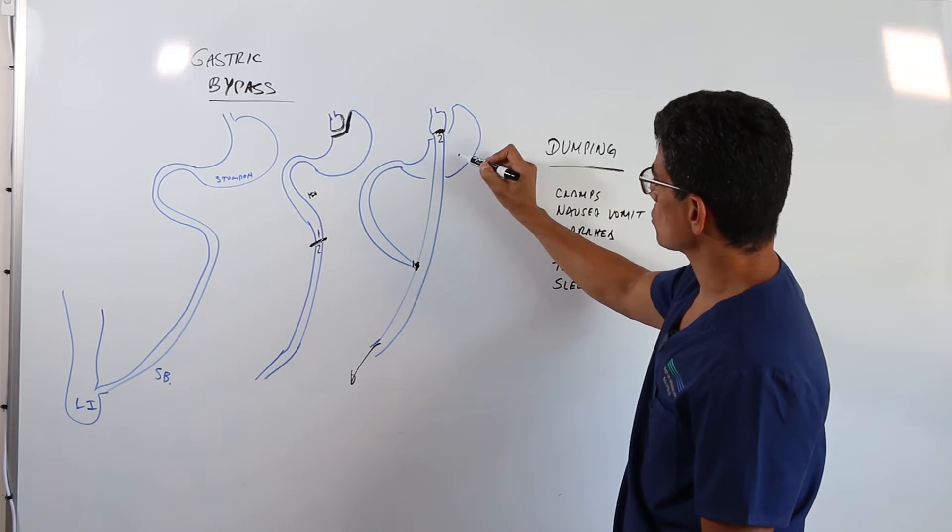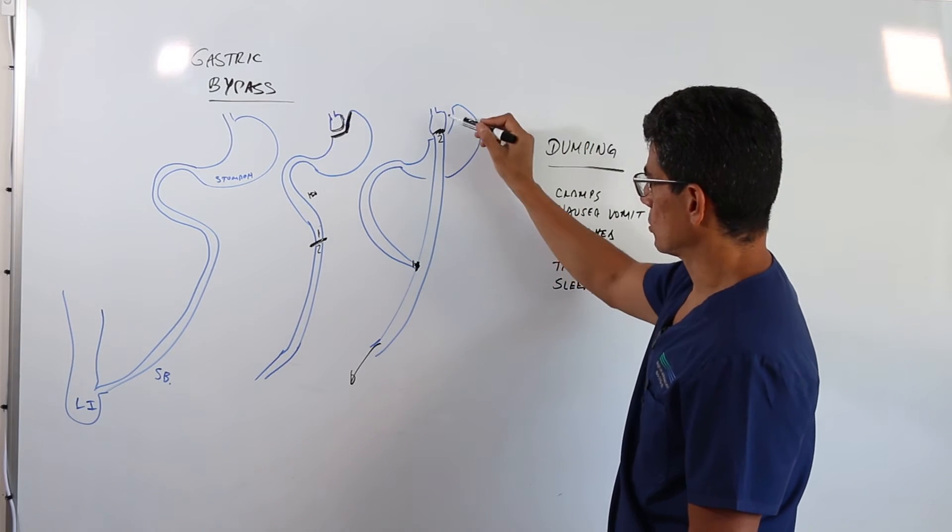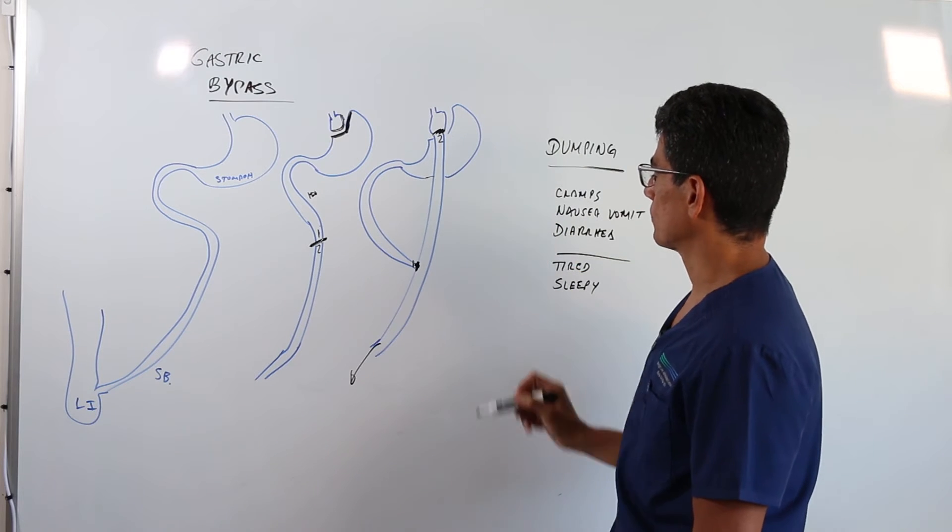And it's going to bypass, jump over the stomach and this long segment of small bowel. So this combination of restriction and malnutrition.